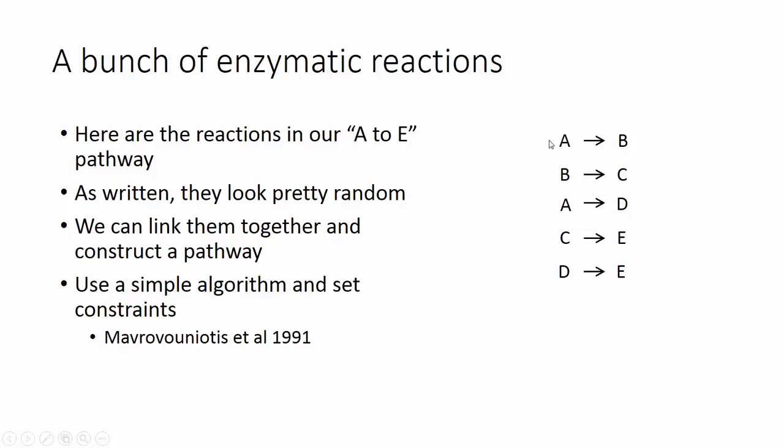We just basically have a bunch of enzymatic reactions. So we have these enzymatic reactions. This is our A to E pathway in terms of just haphazardly arranged enzymatic reactions. As written, yes, they look pretty random.